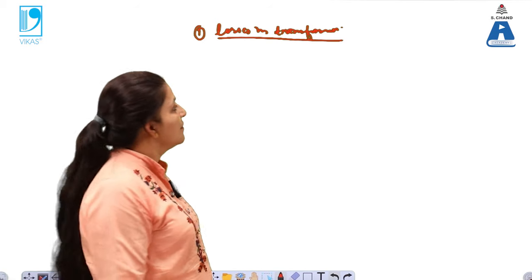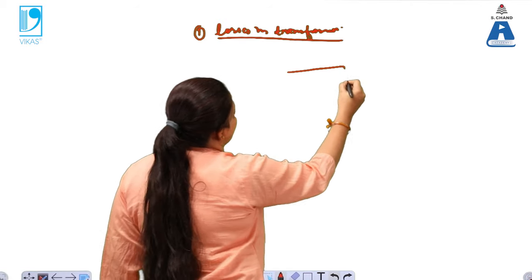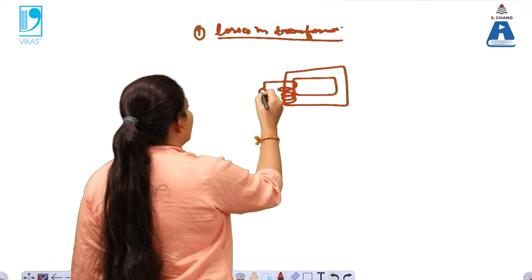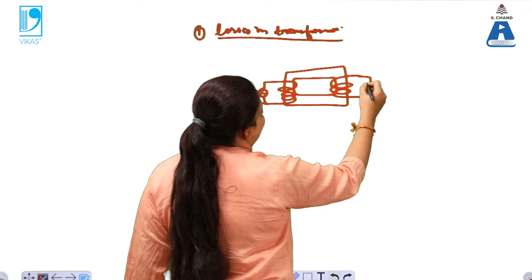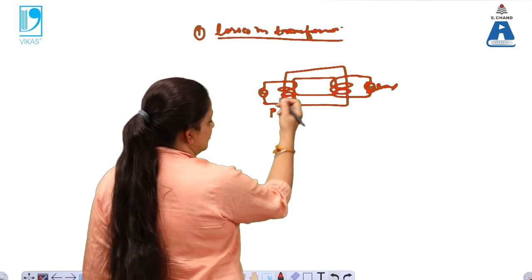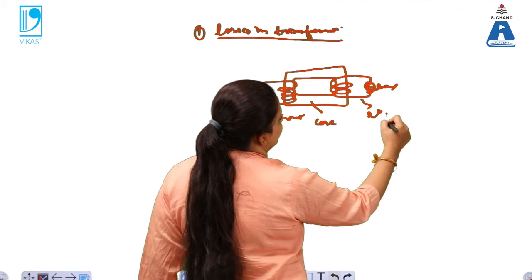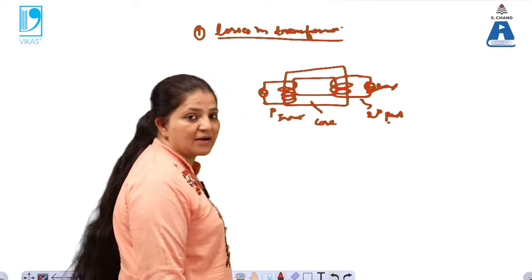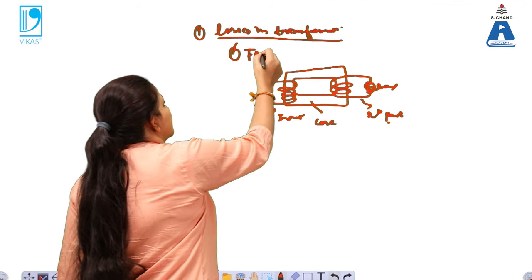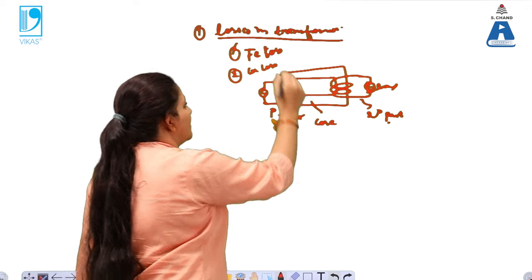Losses are basically responsible for making the output smaller than the input value. Here we have the core of the transformer, the primary winding where we give the input, and the secondary winding connected to a load where we get the output. There are two types of losses in the transformer: the first one is iron loss and the second one is copper loss.